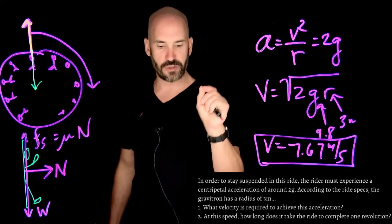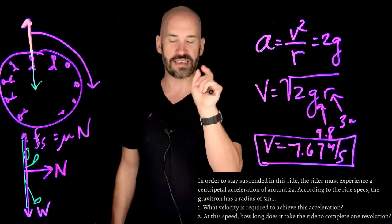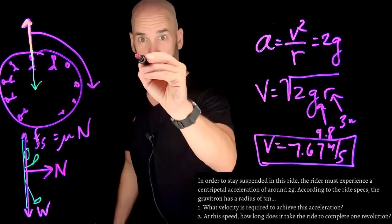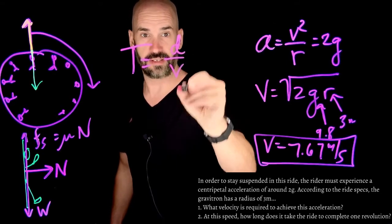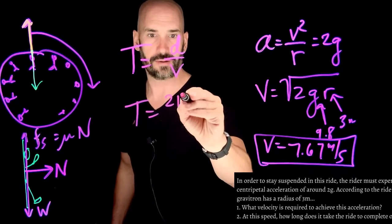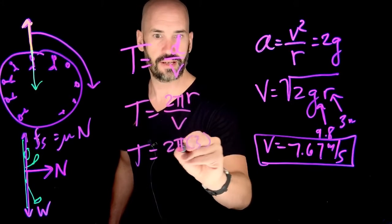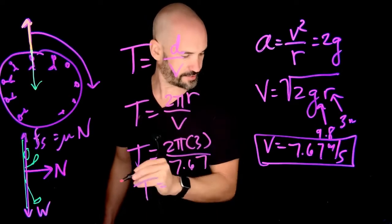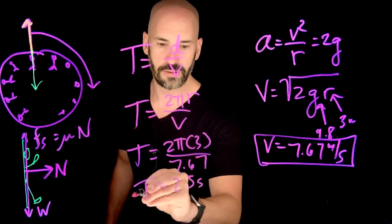Next question is, at this speed, how long does it take the ride to complete one revolution? So this is another way of me sneaking in a period question. How long does it take for one revolution? That's just period again. Remember, period is just equal to the distance that you're traveling divided by the velocity. And that's the distance of one full revolution, which is just 2 pi r. So that's just going to be 2 times pi times 3 divided by the velocity, which is 7.67. So it takes us, according to my calculation, 2.5 seconds to complete one full revolution.